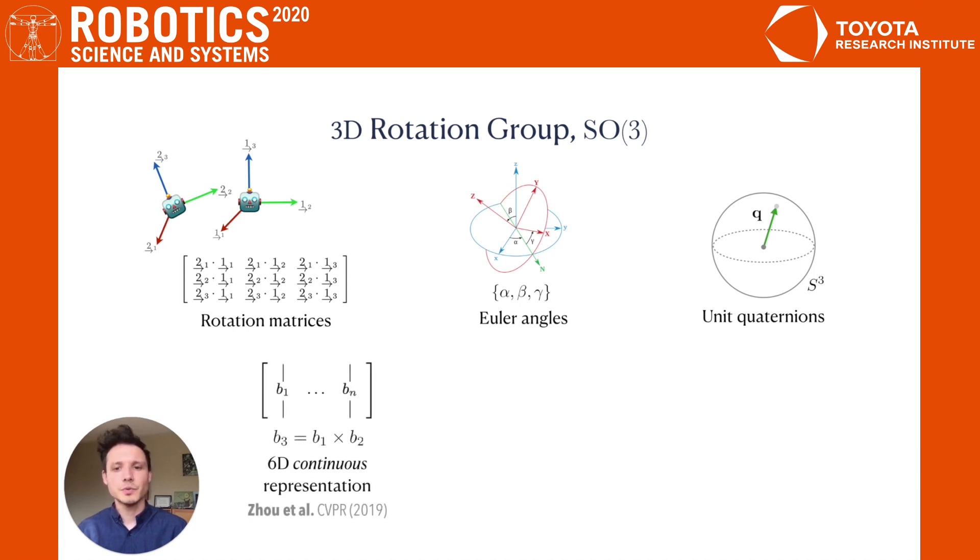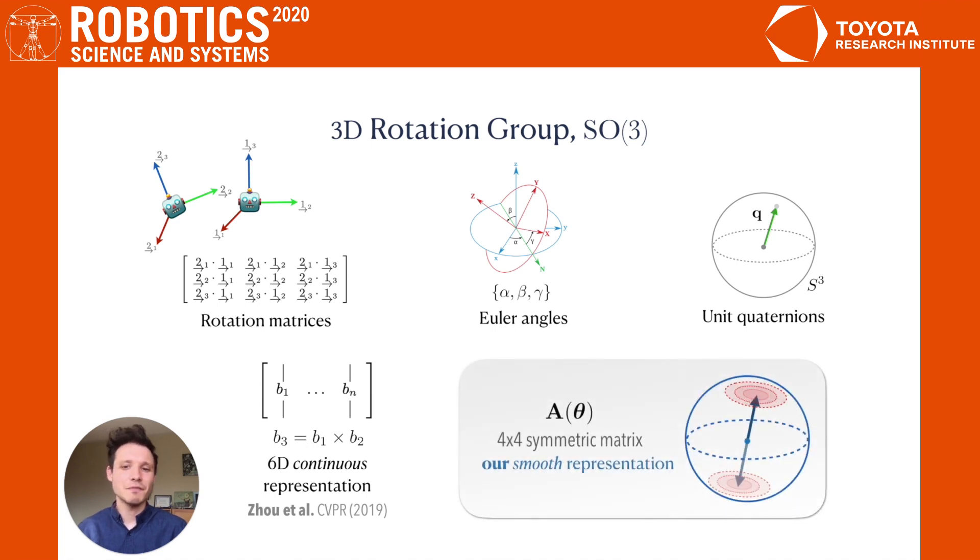However, Zhou et al recently identified an important shortcoming of unit quaternions in the context of learned models and introduced their own 6D representation. Building off of their insights, we introduce our own novel representation of SO3 based on 4x4 symmetric matrices.